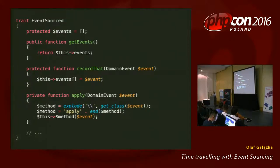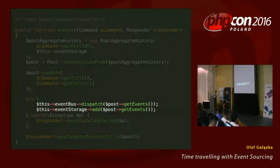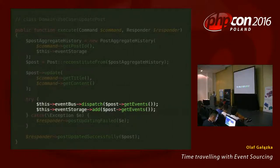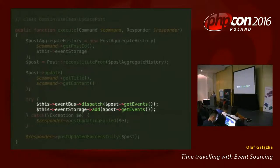Going back to the update use case: after executing the update method, the post is in a new state and contains all recorded events — in this case one event. Then you start a transaction and dispatch and persist those events in the event storage. There is no place where you save the state of the post — you are only saving the events that occurred.